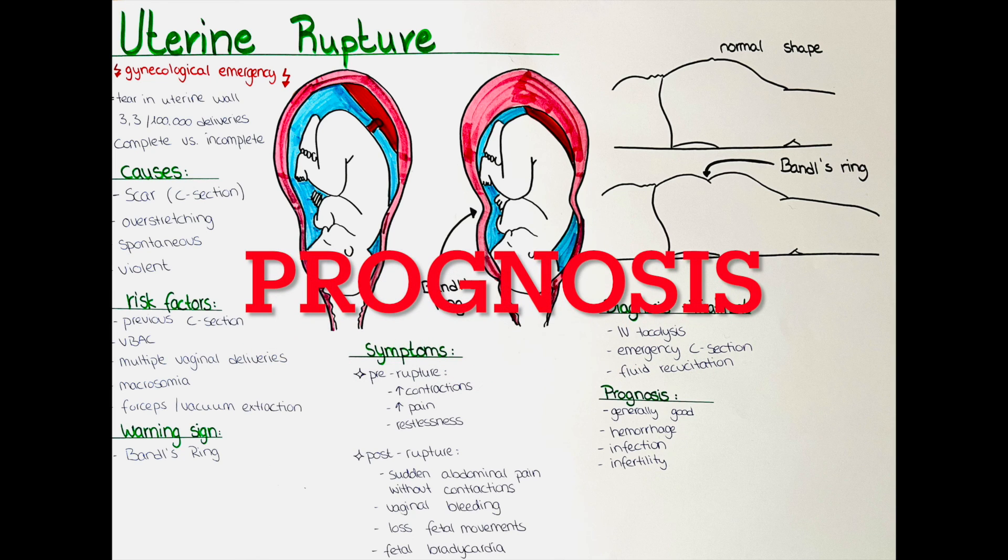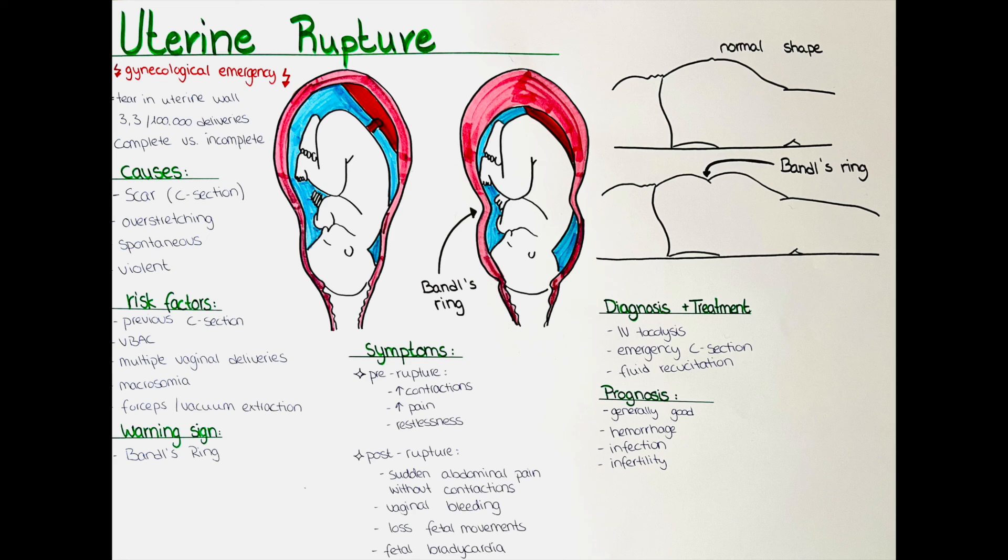How is the prognosis for uterine rupture? Prognosis for uterine rupture is generally good if the baby is delivered promptly. However, there is a risk of maternal complications such as hemorrhage, infection, and infertility.